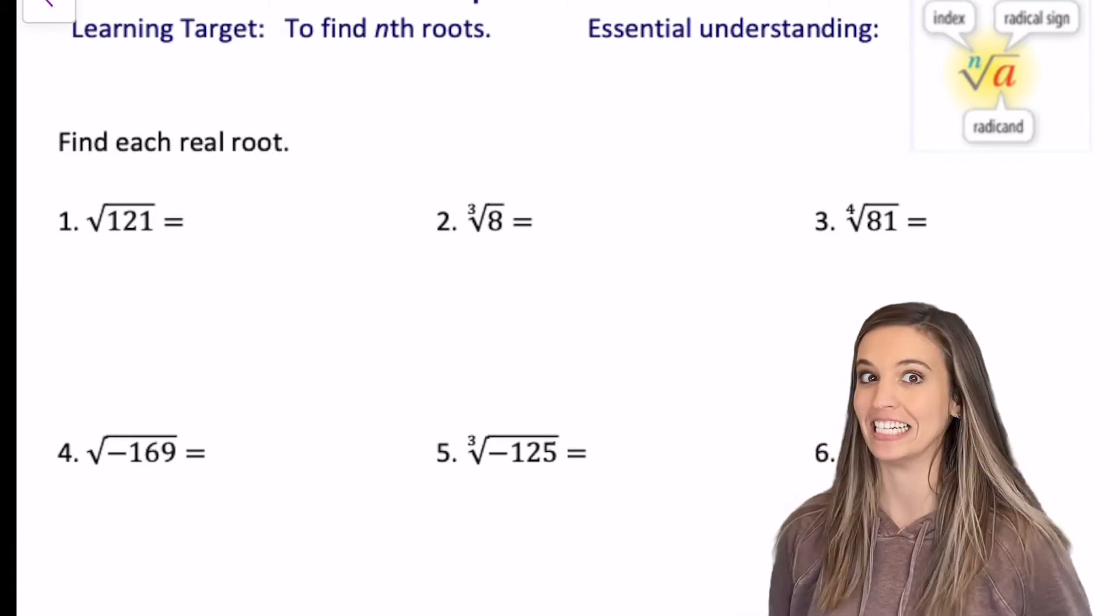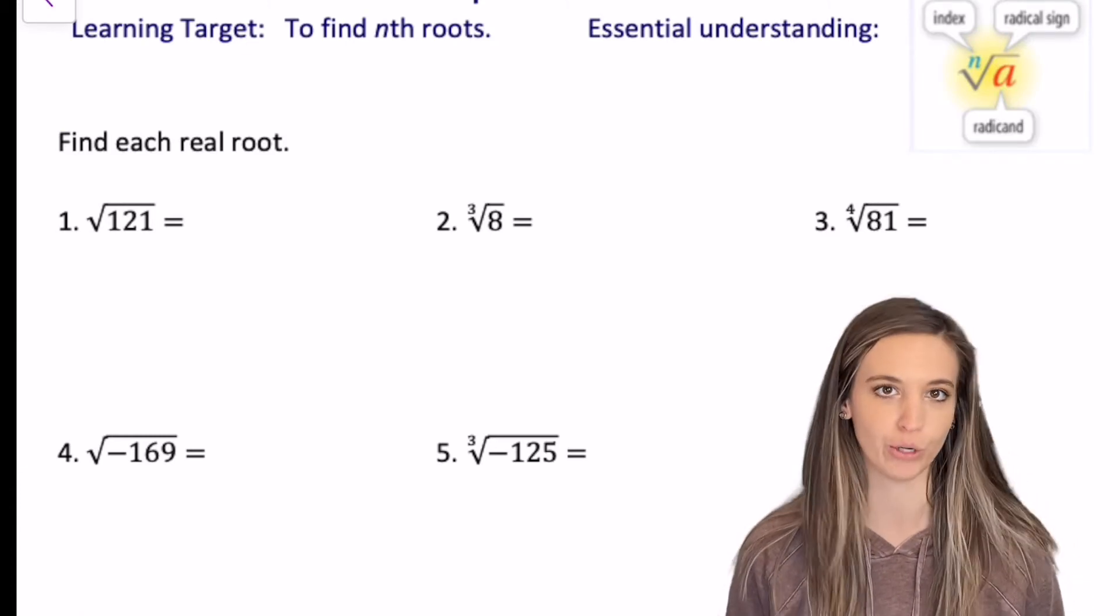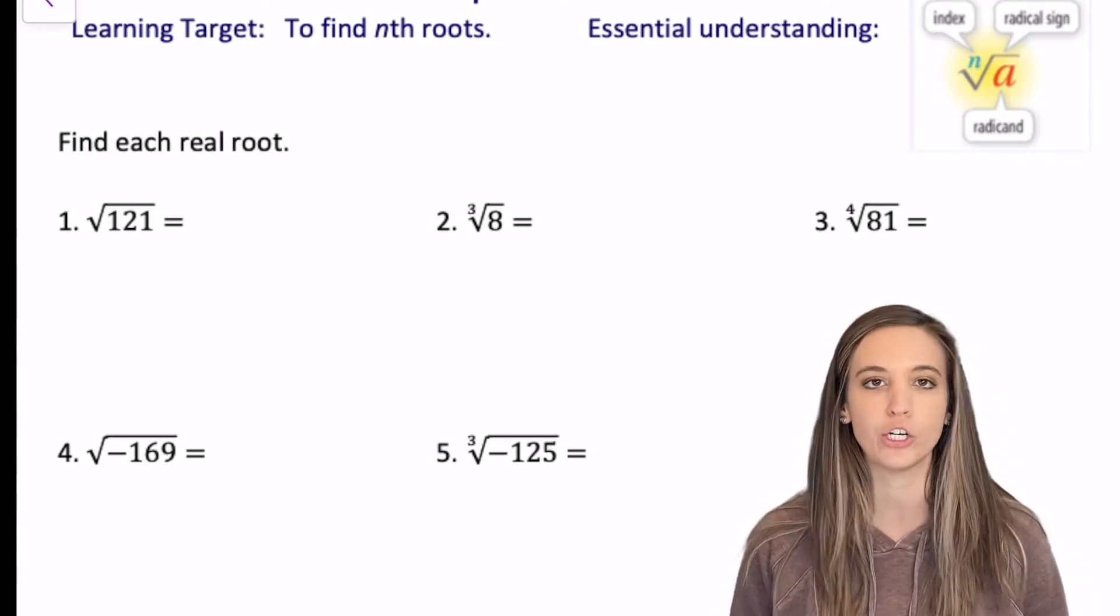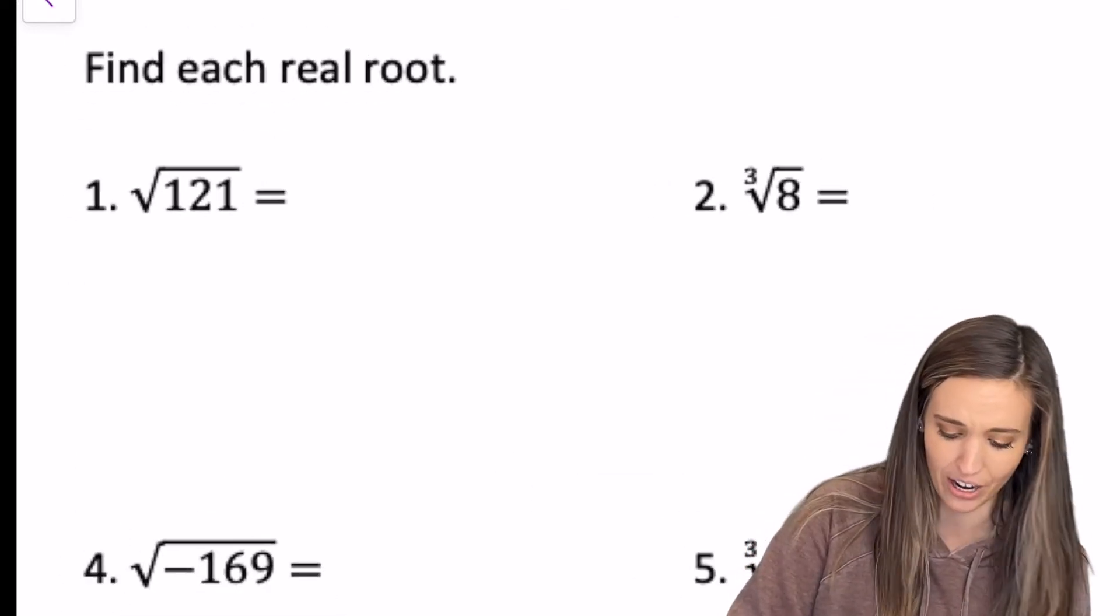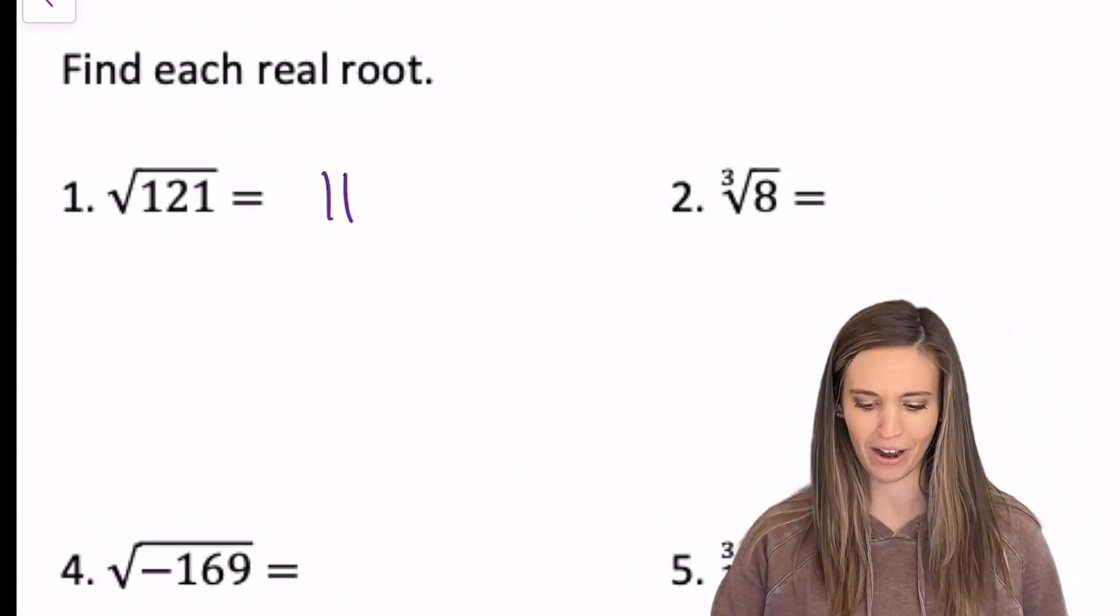So let's try to find each real root. Okay, so square root of 121. I know it's a square root because I don't see an index there. That's just 11. We know that one by heart.